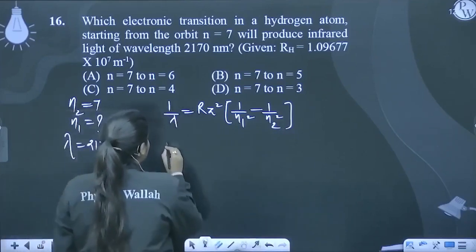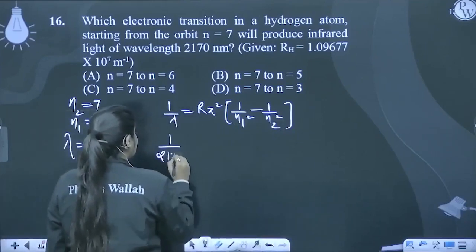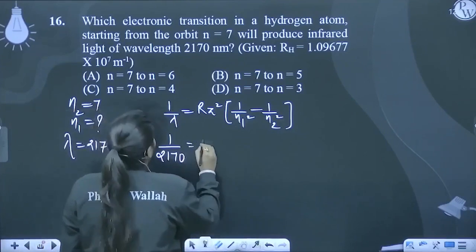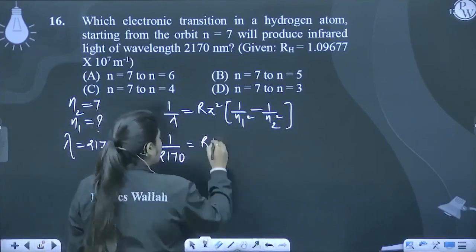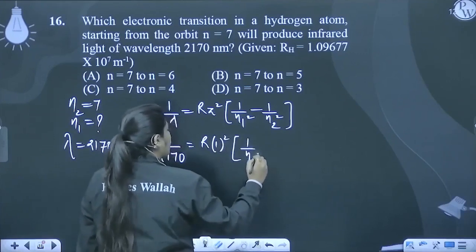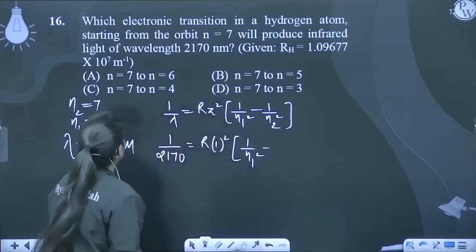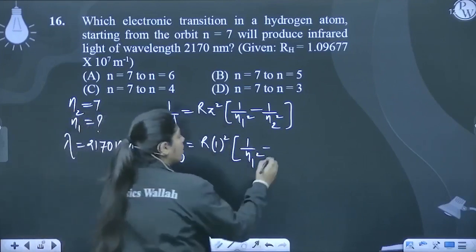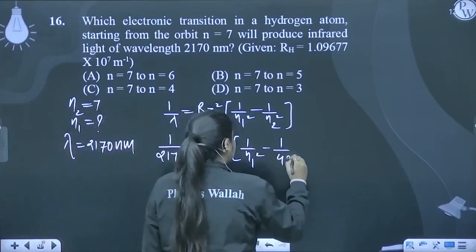So wavelength is how much? 2170 nanometer. R ko abhi aasi rakta hai. Kis ki baat kar hai? Hydrogen atom ki. N1 nikalna hai. And n2 is 7. That means 7 ka square is 1 upon 49.